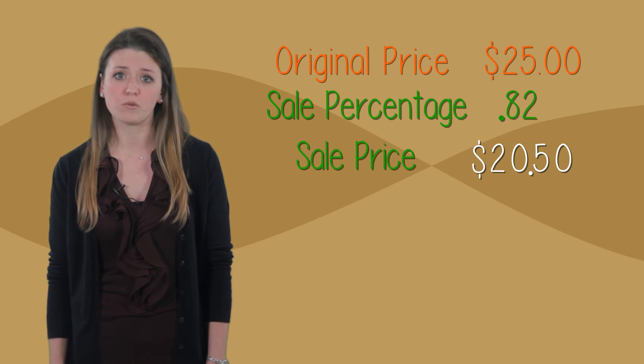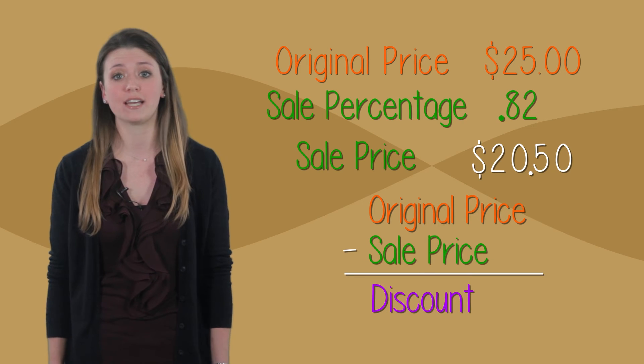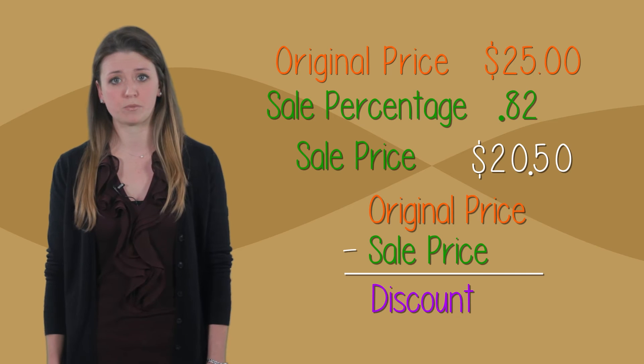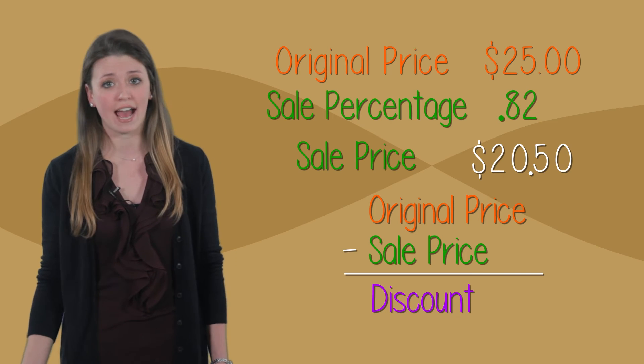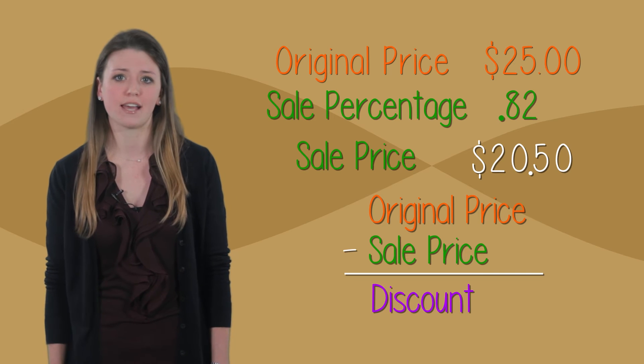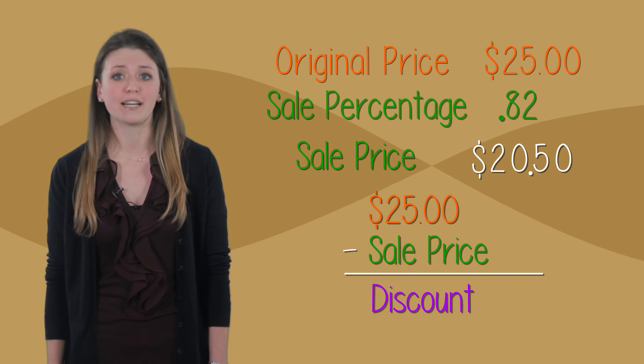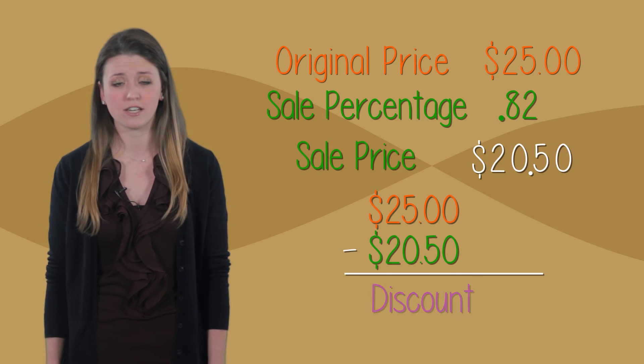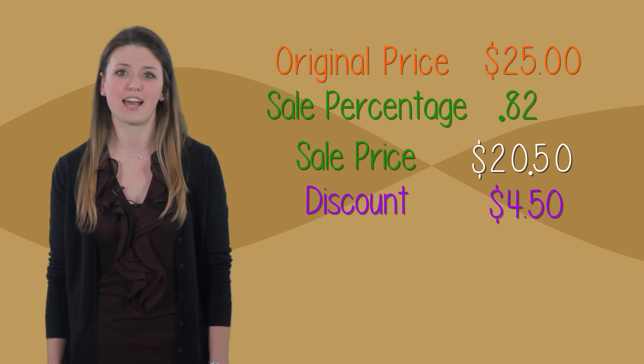Our discount would be the original price, what the item usually costs, minus our sales price, what we paid for it after the discount. The difference would tell us how much we saved. $25 minus $20.50 equals $4.50. That's our discount.